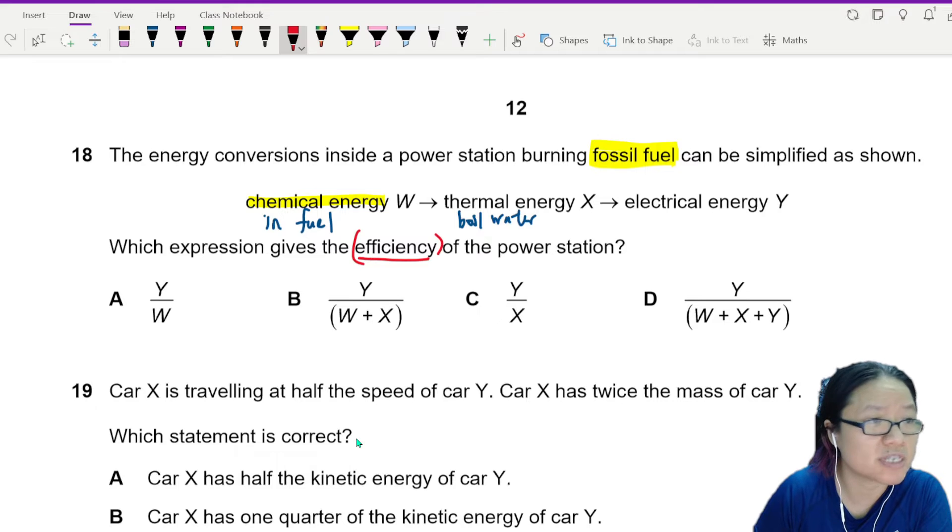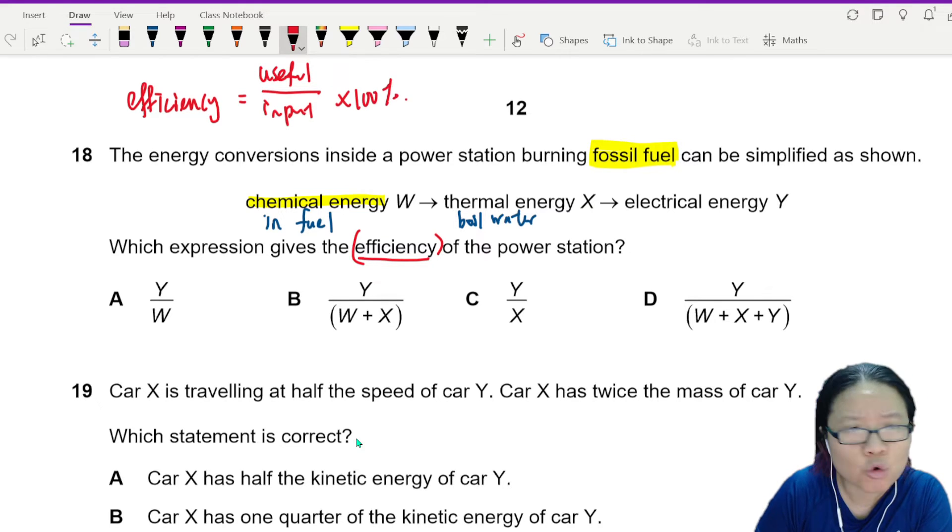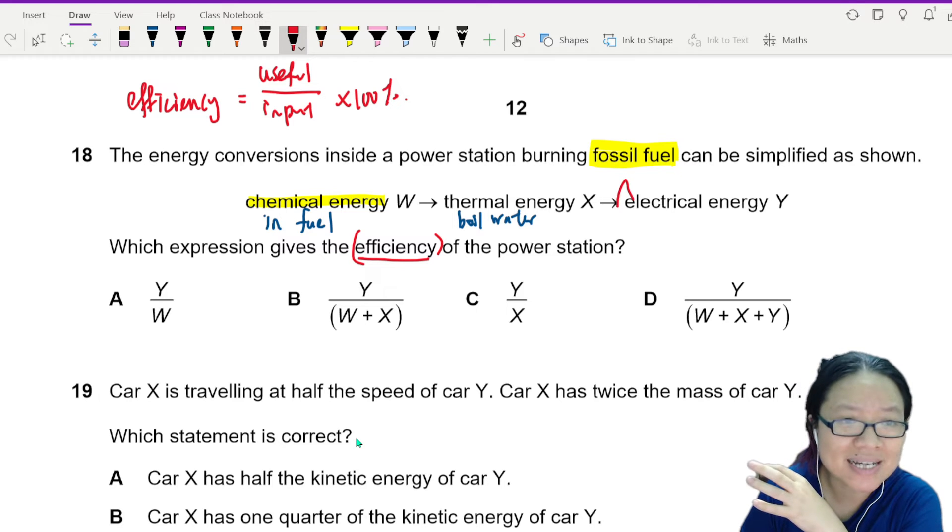Which expression gives the efficiency of the power station? So whenever we look at efficiency, efficiency is useful divided by input, useful power divided by input power times hundred percent. Who is useful here? Not the fuel, not the thermal energy, but the electric energy. This is what we want, this is the useful energy.